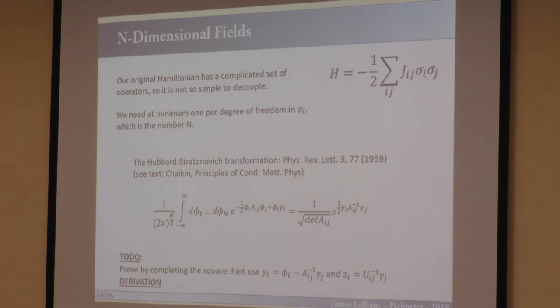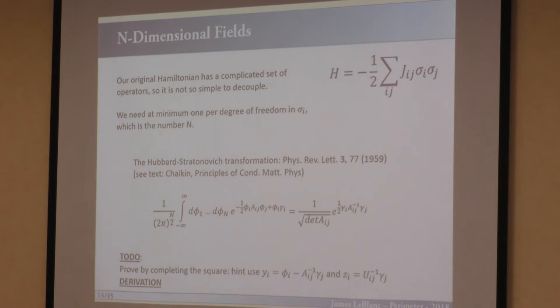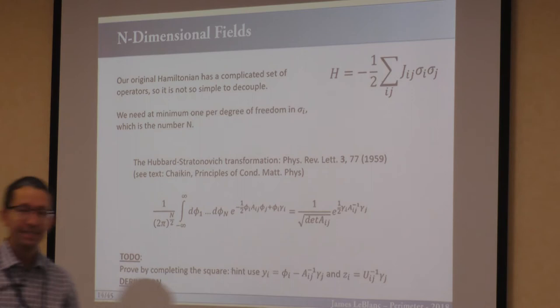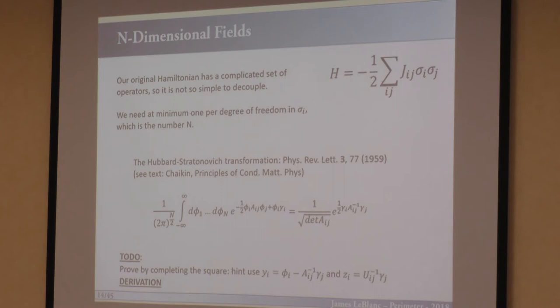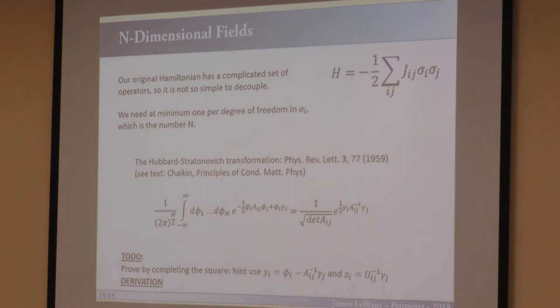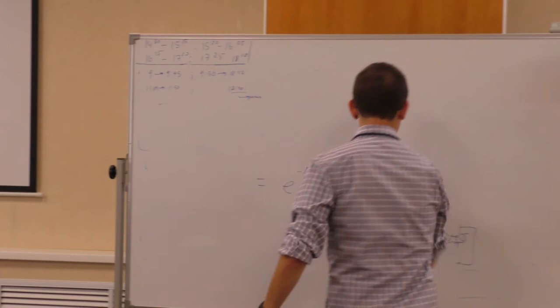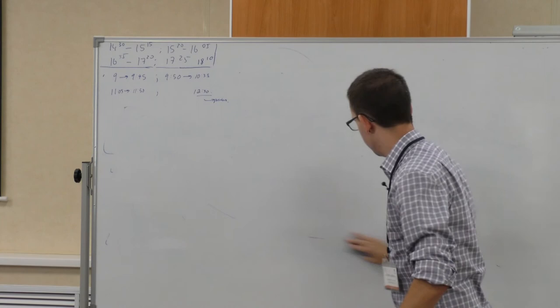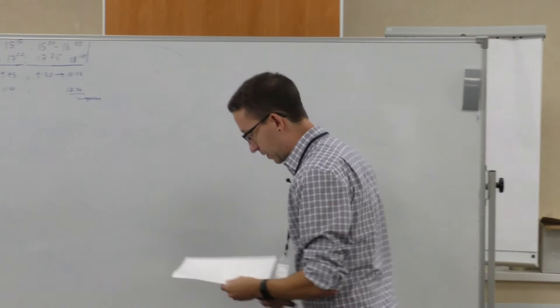The decoupling strategy you'll encounter most is the Hubbard-Stratonovic transformation — there's the textbook by Chaikin and the original paper from 1959. For this big mess of operators, we have to introduce a set of auxiliary fields phi_1 through phi_N, producing a series of vector or tensor-type objects. This becomes pretty nontrivial quickly. I'll give a half-page sketch derivation rather than a full one — I'll write the basic pieces needed and at each intermediate step write what you'd get once you do those transformations.